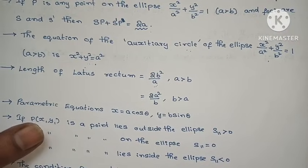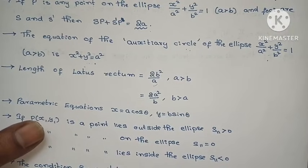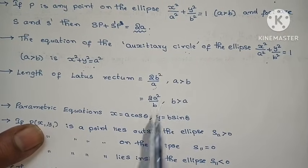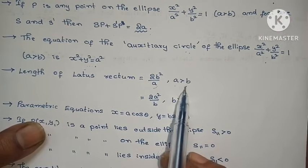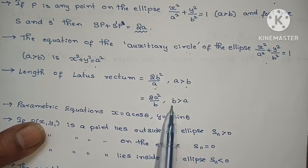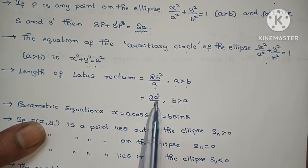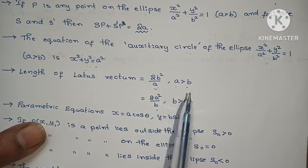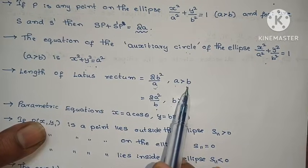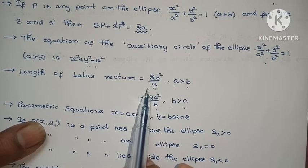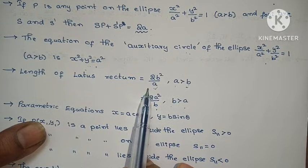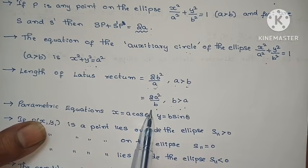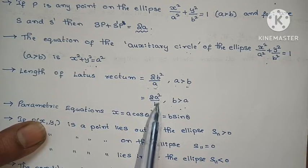The problem is to find the length of latus rectum. When a greater than b, the length of latus rectum is 2b² by a. When b greater than a, it is 2a² by b. The greater value goes in the denominator.